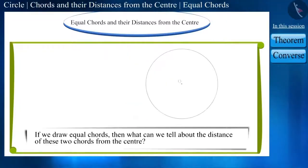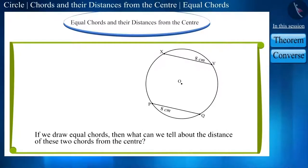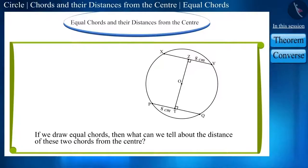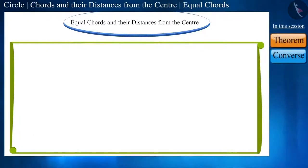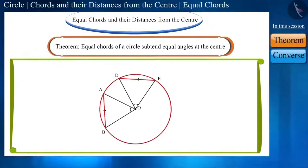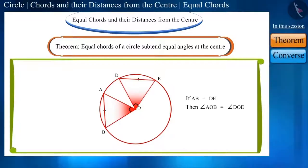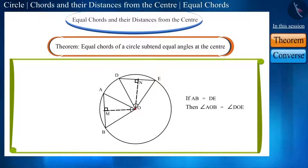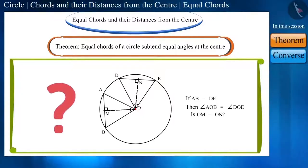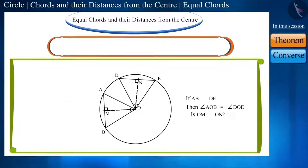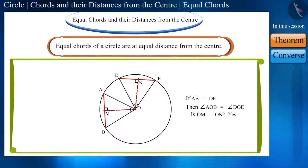But friends, if we draw equal chords, then what can you tell about the distance of these chords from the center? We know that equal chords of a circle subtend equal angles at the center. Yes friends, equal chords of a circle are at equal distance from the center.